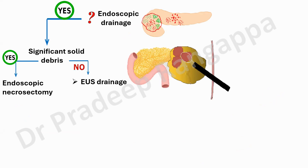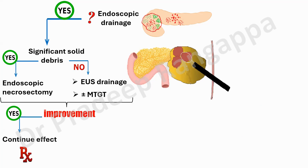If significant solid debris is not present, then endoscopic ultrasound drainage or multiple transluminal gateway technique (MTGT) is suggested. MTGT is the acronym to remember — we are not experts in this, but remember these words when GI teams use them. As per the algorithm, if improvement happens, continue effective supportive treatment after endoscopic necrosectomy. If there is no improvement with endoscopic drainage or MTGT, then one has to resort to surgical necrosectomy. This is the algorithmic approach for necrotizing pancreatitis.